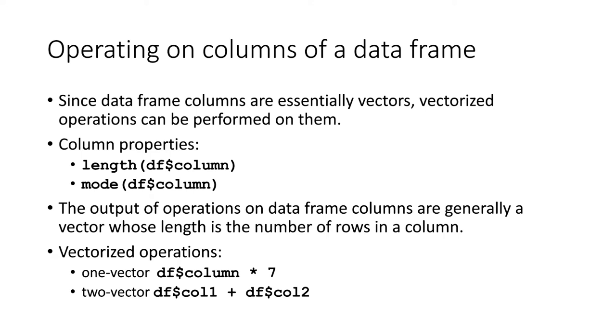For example, we use the length function to find out the number of items in a vector. We can also use the length function to find out the number of rows in a column by inserting the dollar sign notation for that column inside the function. We can also find out the type of data that is found in that column by using the mode function. Recall that in vectors you may only have a single type of data in a vector. We say that vectors are homogeneous. The same thing is true of columns in data frames. All of the items that are in a column in a data frame must be homogeneous because, as we said, they are essentially vectors.